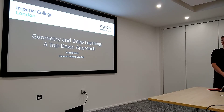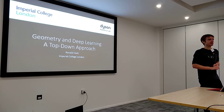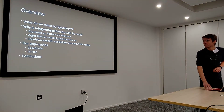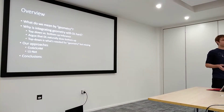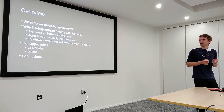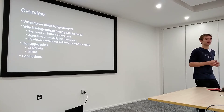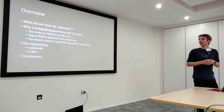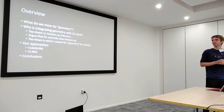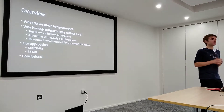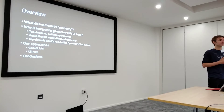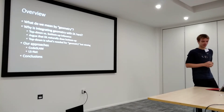Hopefully at the end of the talk you'll be convinced of two things: firstly, that geometry is a very good signal for learning, and secondly, that we need both top-down and bottom-up processing for our perception systems. I'll start with what we actually mean by geometry and deep learning, then move on to why integrating geometry with deep learning is so challenging. I'll look at two works: CodeSlam and AliceNet, and then summarize the key points.